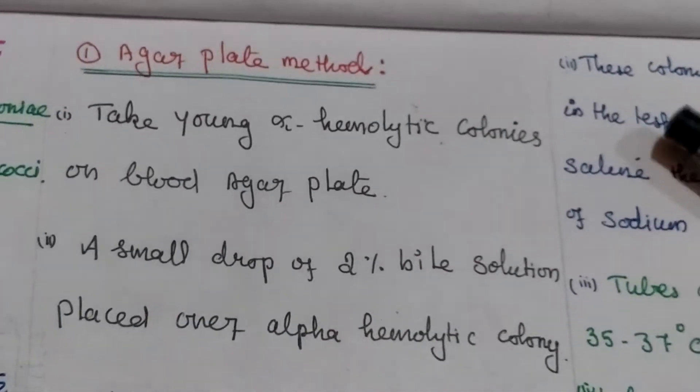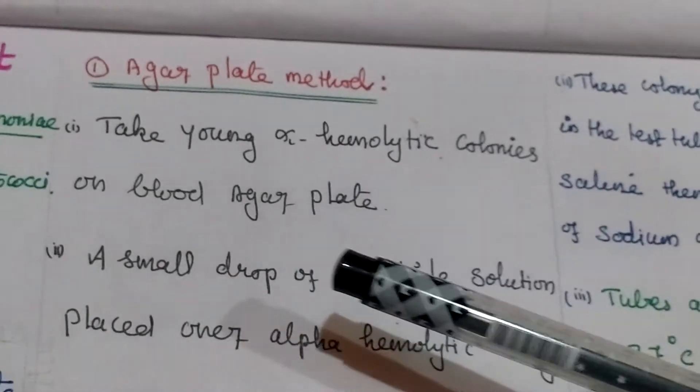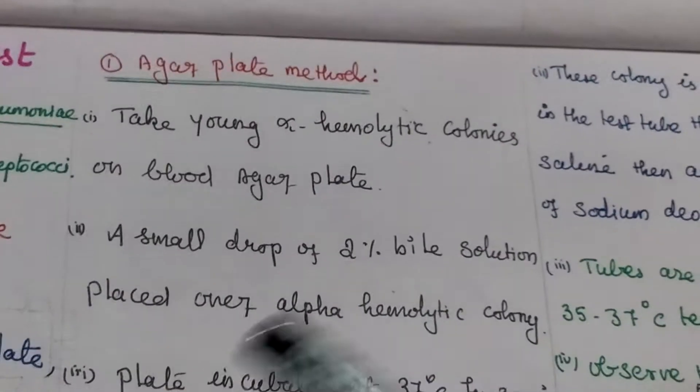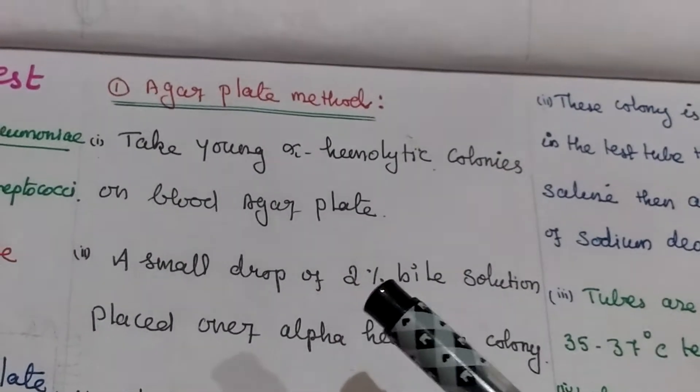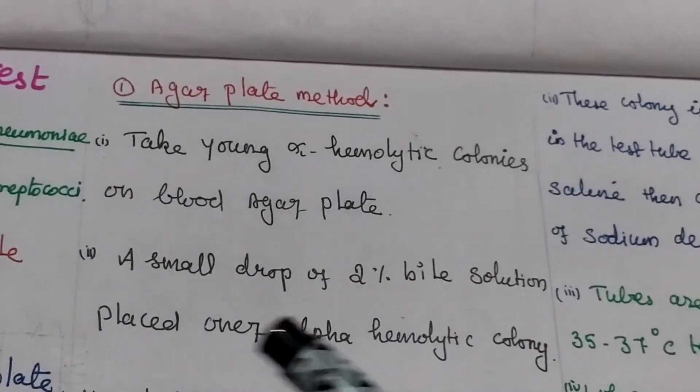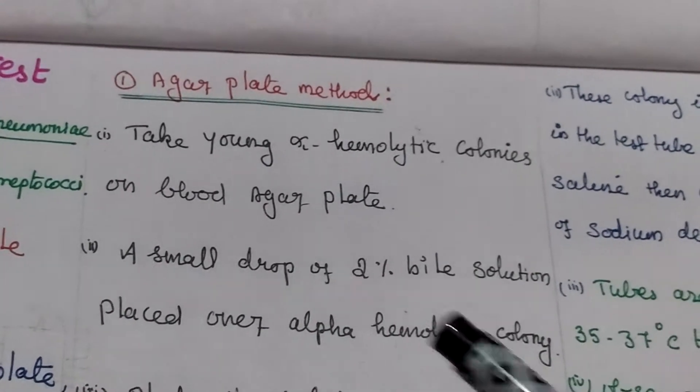Here we will take young alpha hemolytic colonies on blood agar plate. Then a small drop of 2% bile solution is placed over alpha hemolytic colonies.